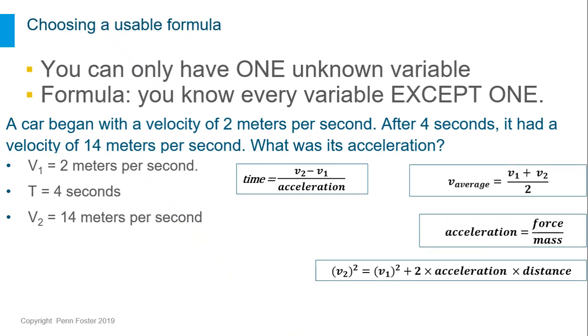First, you can eliminate any formula that doesn't have acceleration, since that is what you are solving for. Then, eliminate any formulas that have more than one unknown variable. This one has acceleration, force, and mass, and we don't know any of them. This one has both acceleration and distance, and we don't know distance.